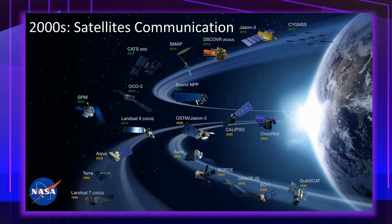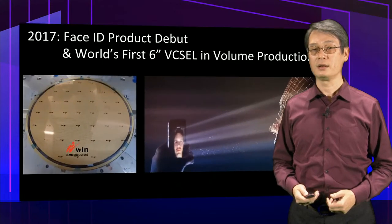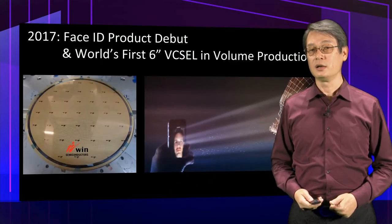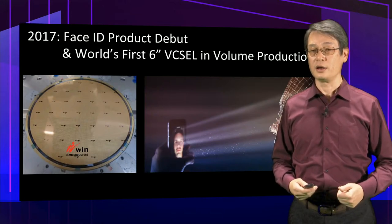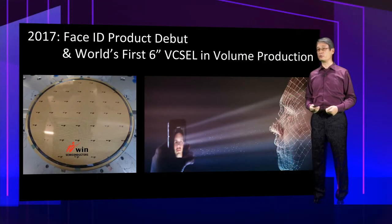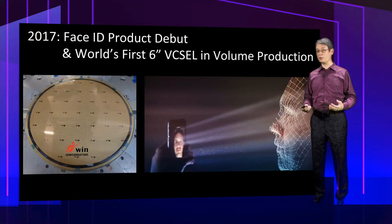Compound semiconductors are widely used in satellite communication, for both space and ground terminals for transmitting and receiving signals. Compound semiconductors certainly helped make satellite communication commercially viable. In 2017, iPhone for the first time introduced Face ID using VCSEL as the light source for a 3D sensing device. This was the first time gallium arsenide ICs were in true volume production on 6-inch gallium arsenide wafers at Win Semiconductors.